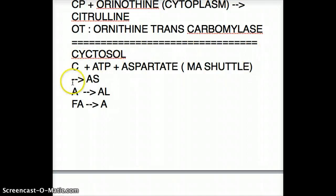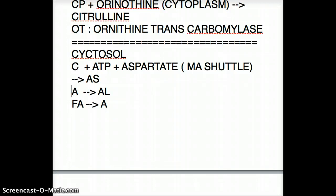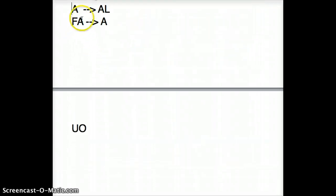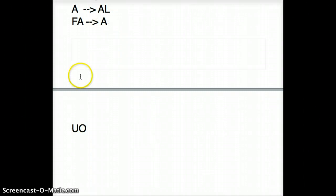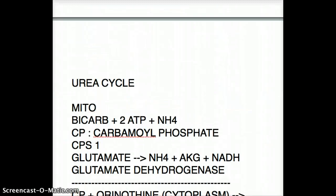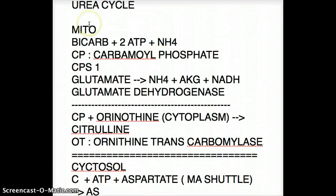Now argininosuccinate becomes fumarate and arginine via argininosuccinate lyase. Then only arginine goes on to give off urea and ornithine using the enzyme arginase — no additional cofactors needed. This ornithine then travels back up into the mitochondria to take part in the reaction of carbamyl phosphate plus ornithine forming citrulline.